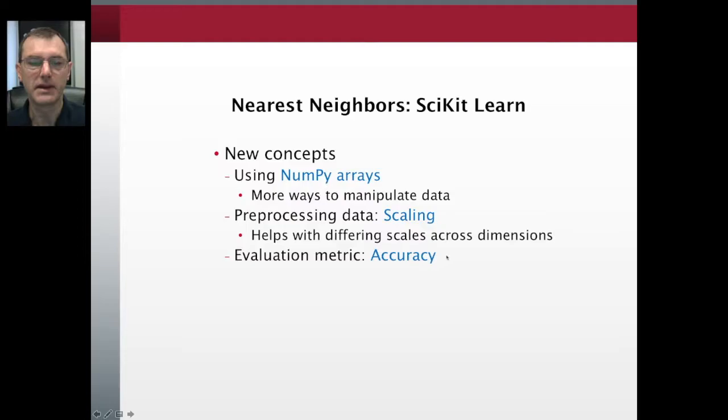We will be using scikit-learn's preprocessing package. In that module, there are several ways to preprocess the data. Specifically for nearest neighbor, we'll use the scaling method, which makes all the different dimensions have about the same variance. In nearest neighbor, if one dimension has very large variance and another very small, the larger dimension will dominate all distance calculations. Scaling removes that artifact so all dimensions contribute equally. Finally, in the metrics package, we'll use the accuracy score to determine how well our classifier is doing.